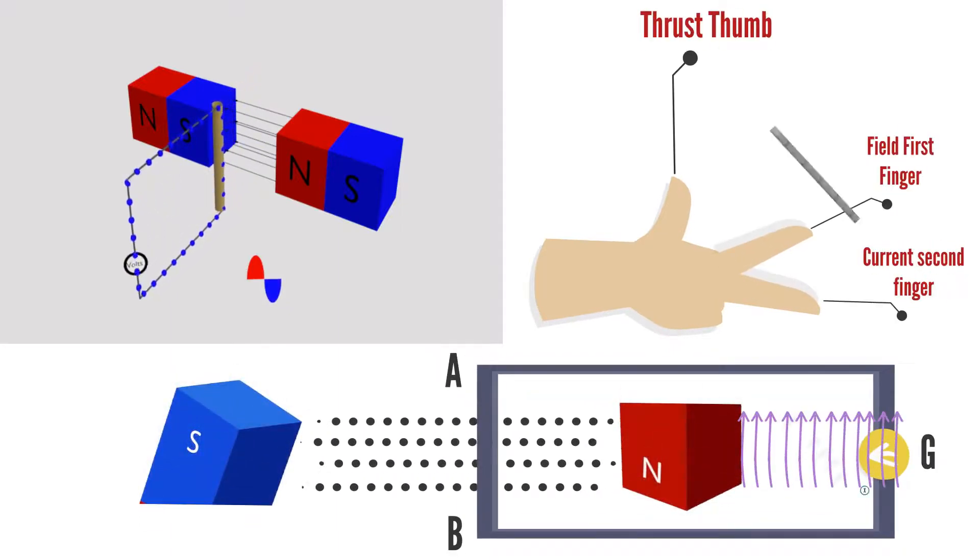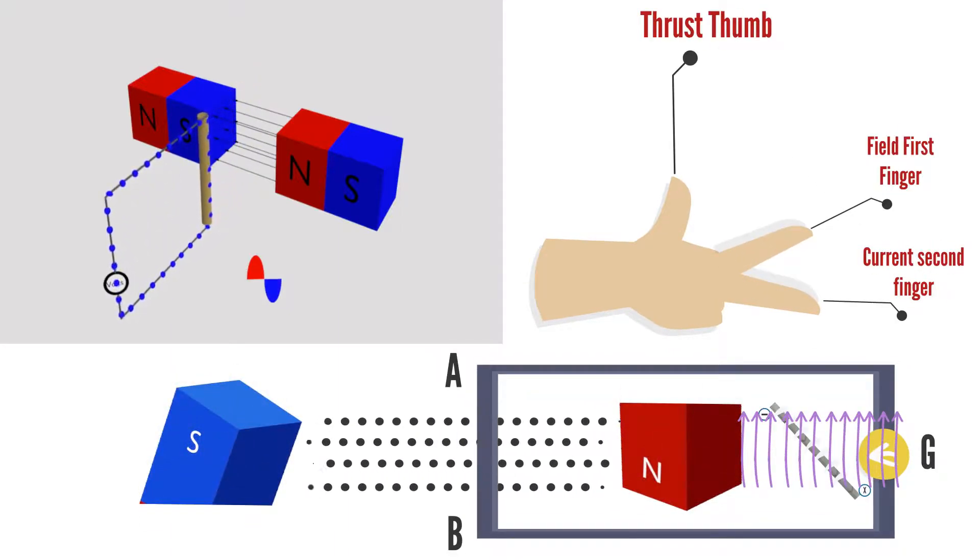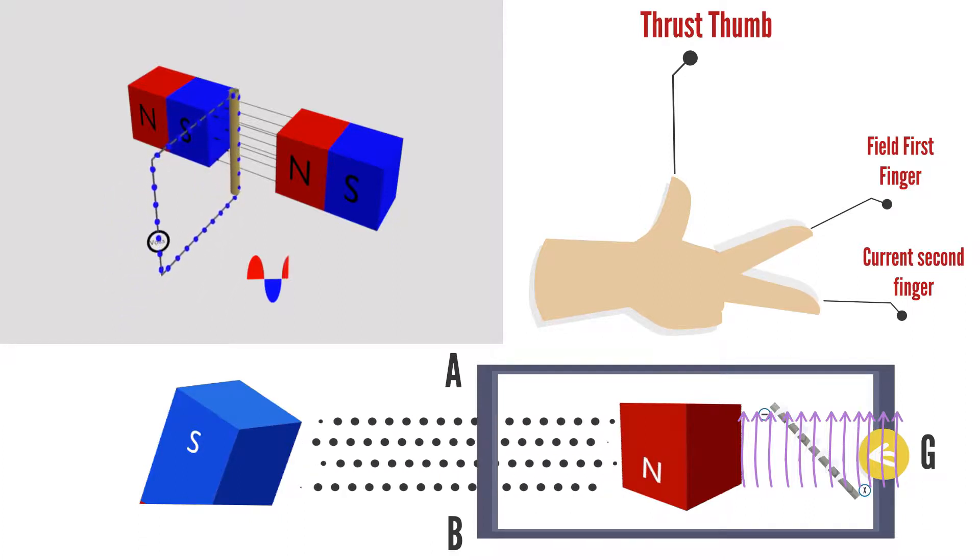Lenz described the production of voltage and subsequent current along a length of wire moving through a magnetic field. When current flows down the wire, a second magnetic field is produced by that current, and remember that magnetic fields are only created by moving charges and electric current.